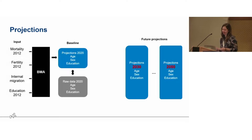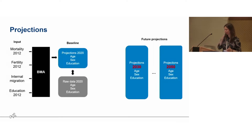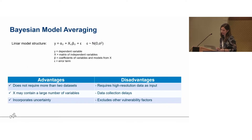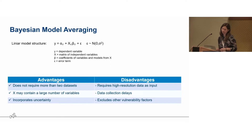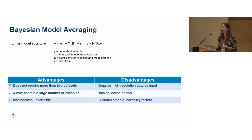A few words about the model: we assume a linear model structure with a dependent variable Y — for example, females with no to primary education — that is dependent on a matrix of independent variables X. One very important advantage of using this Bayesian approach is that the X matrix of independent variables can be very large, so we can use many different types of data. This solves the issue that it is not very clear from the literature which variables should be used to determine educational projections.